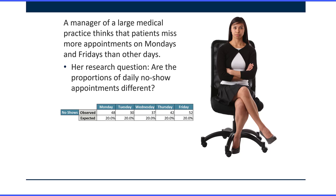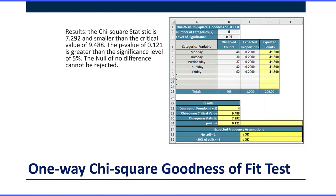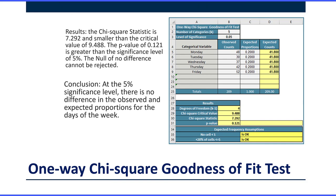We've got a manager of a large medical practice, and she thinks that patients miss more appointments on Mondays and Fridays than other days. She gathers data from their records and has the counts of the no-shows experienced on five days of the week. If there is nothing unusual, the expected proportion would be 20 percent per day. She can answer her question using a one-way Chi-square goodness of fit. She runs that test and concludes at the five percent significance level there is no difference in the observed and expected proportions.